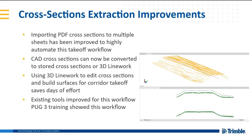In general, large companies that do roadways haven't been using TBC to estimate their corridors. But this gives them a new opportunity, and we've found that the comparison between the old way of doing things and these new enhancements that we've made shows about an 8 to 1 increase in speed. So what used to take three days could now take three hours.